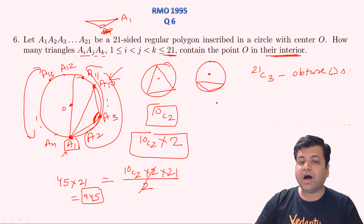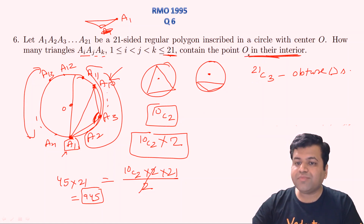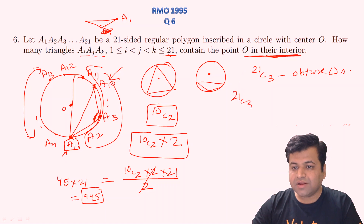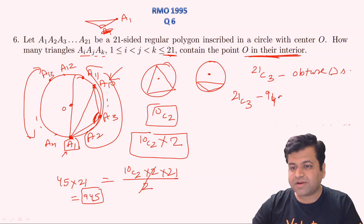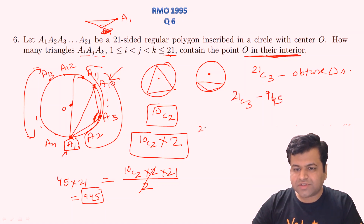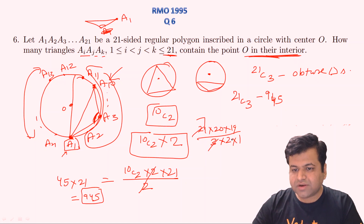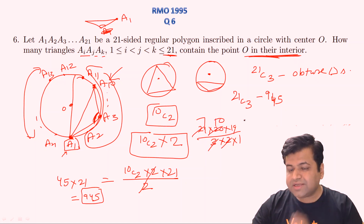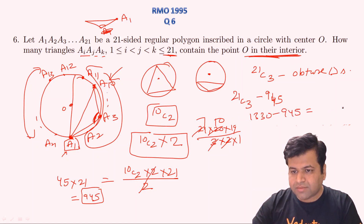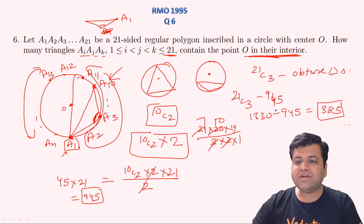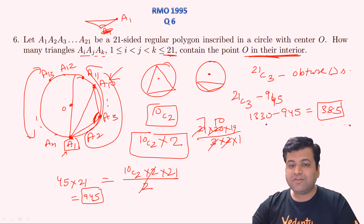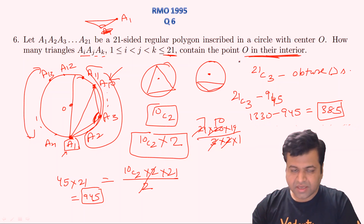Our aim is to find the number of acute-angled triangles, since only in those triangles will O be an interior point. The number of acute-angled triangles is 21C3 minus 945. Now 21C3 = (21 × 20 × 19) / (3 × 2 × 1) = 1330. So the answer is 1330 − 945 = 385. Therefore 385 is the number of triangles in which O is their interior point.